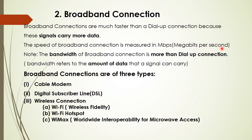Dial-up connection carries less data compared to broadband. The speed of broadband connection is measured in Mbps — megabits per second. A very important term here is bandwidth: bandwidth is the amount of data that a signal carries. We measure the speed of internet in terms of bandwidth. Broadband connections are of three types: cable modem, DSL (Digital Subscriber Line), and wireless connection.